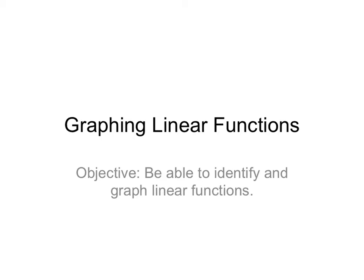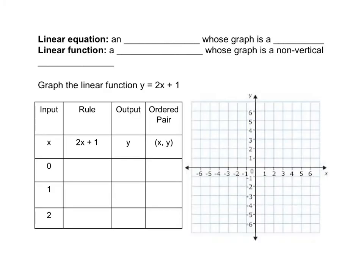By the end of this lesson, you're going to be able to identify and graph linear functions. So a linear equation is an equation whose graph is a line. And a linear function is a function whose graph is a non-vertical line. So it's essentially a linear equation, except for the stipulation of the fact that the line cannot be vertical.